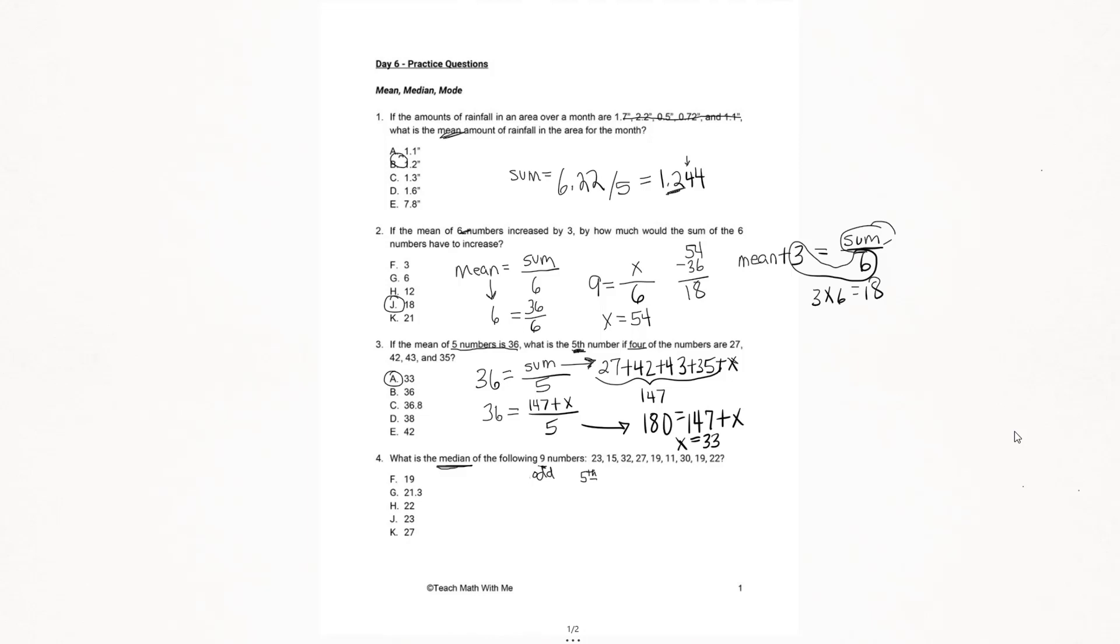So we can look at ordering these numbers in the data set from one to five. And when we find that fifth position, that's going to be our median. I'm going to begin ordering from least to greatest. The smallest number is 11. The next smallest would be 15. Then we're going to go to 19 and 19. We have two 19s. Make sure you list both of those. That's in the third and fourth position. And then the next number looks like it's going to be 22. I already know from nine numbers, it's the fifth position I'm looking for. And that's going to be the value of 22, which is letter H.